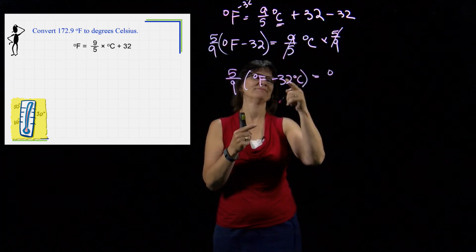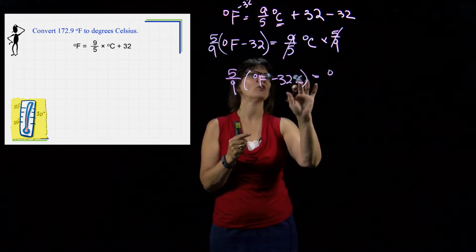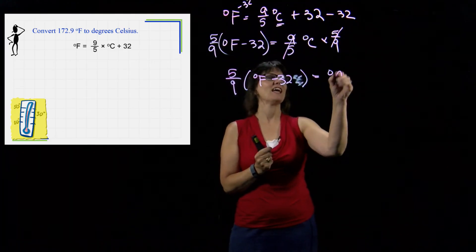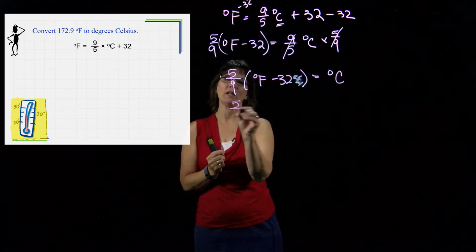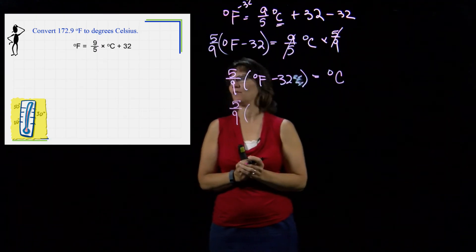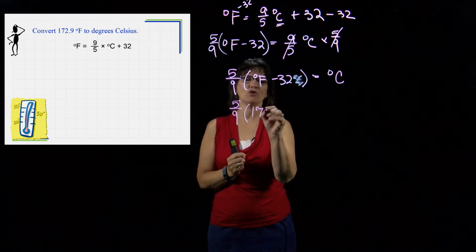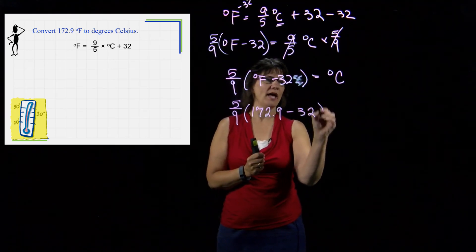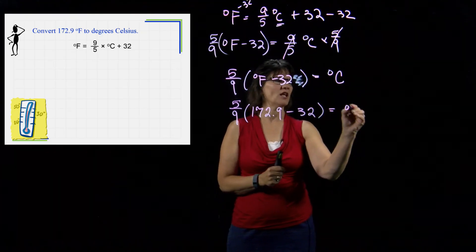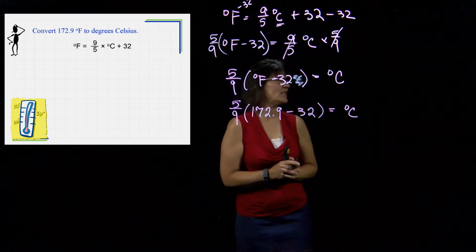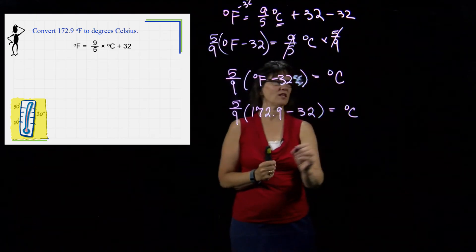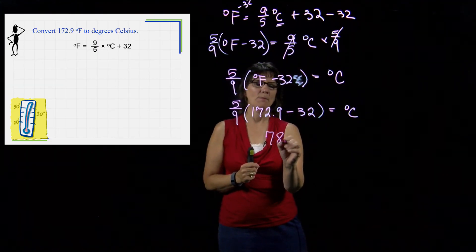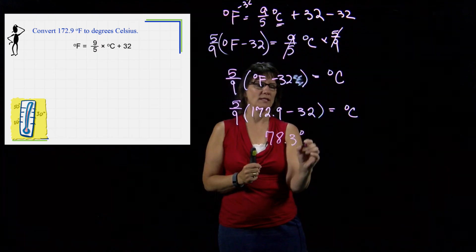Now I want to get the 9/5 over to the other side. So I have to multiply both sides by 5/9. That's going to leave me with 5/9 times the temperature in Fahrenheit minus 32 equals the degrees Celsius. Now we're ready to plug in the value. We have a temperature of 172.9. We are going to subtract from it the 32. When we do this calculation, the value for this temperature in Celsius is going to be 78.3 degrees Celsius.